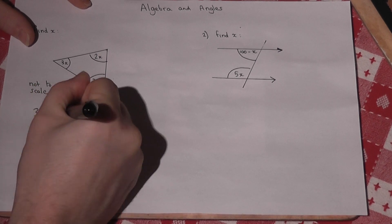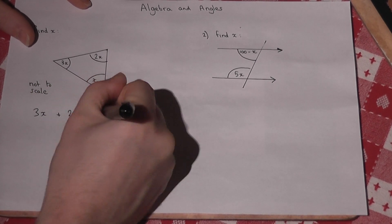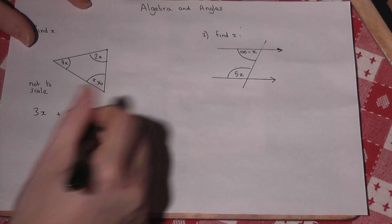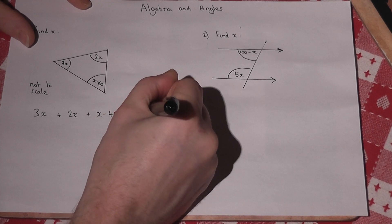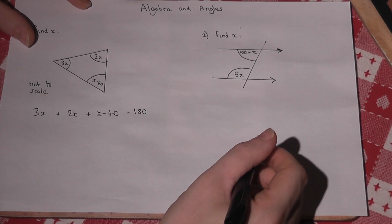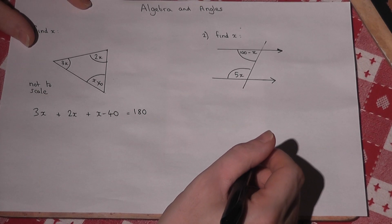3x plus 2x plus x minus 40. They're the three angles. They must equal 180 due to the degrees in a triangle, making 180.